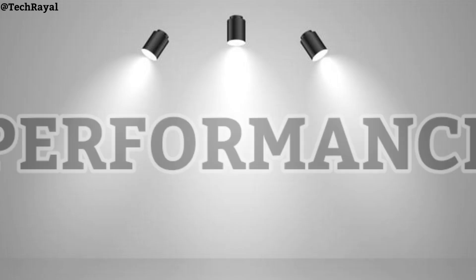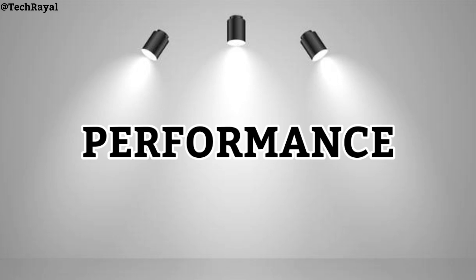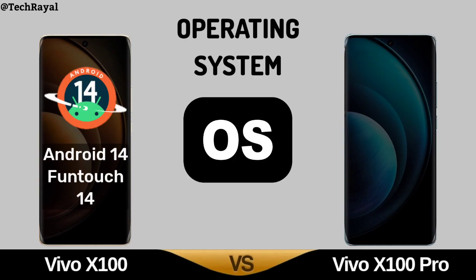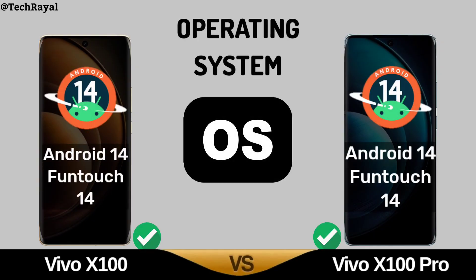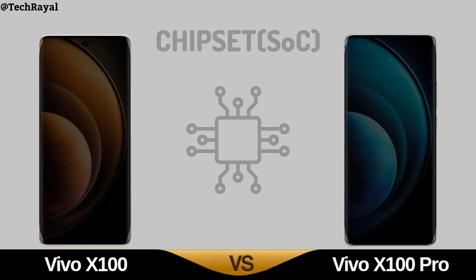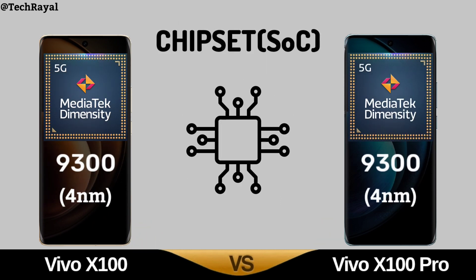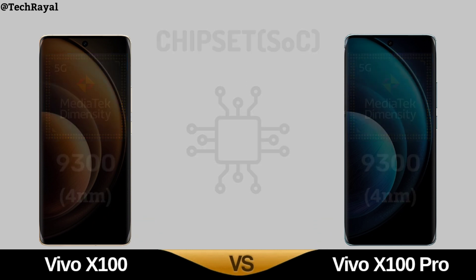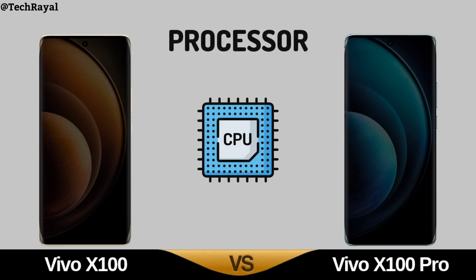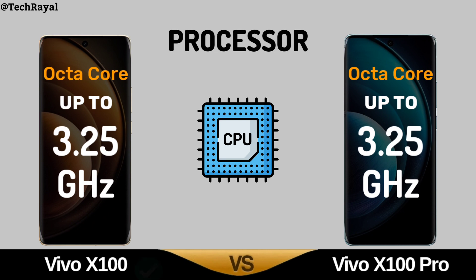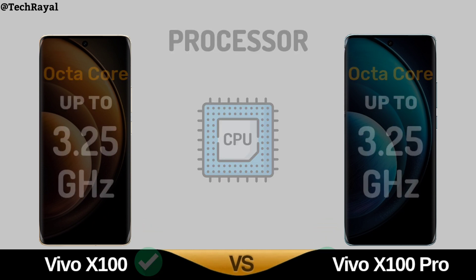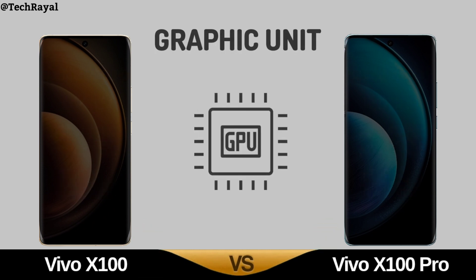Now, Core Performance: Operating System. Chipset. Processor. Graphic Unit.